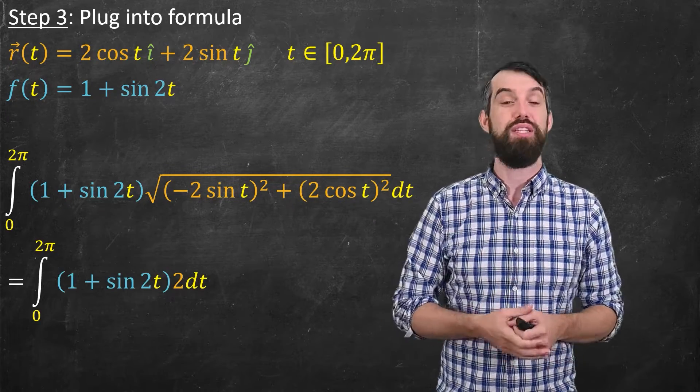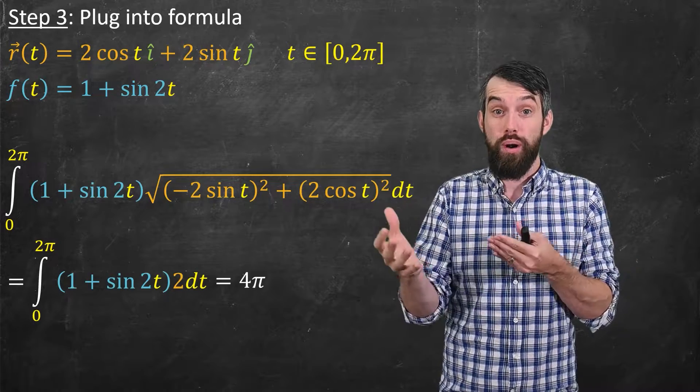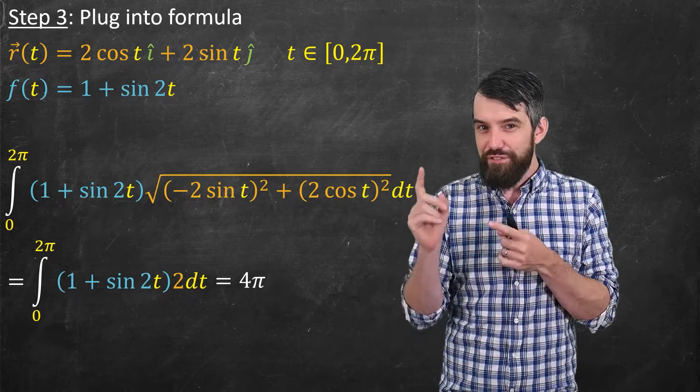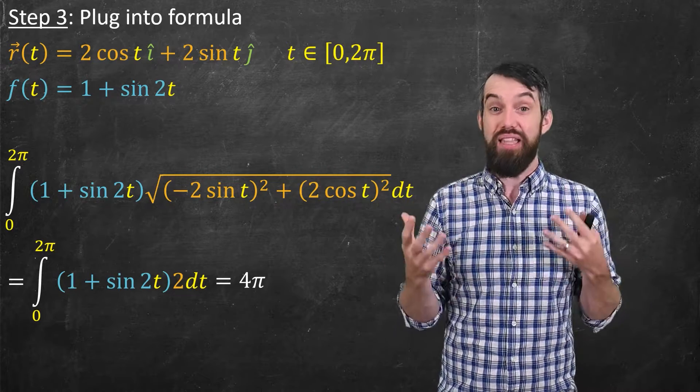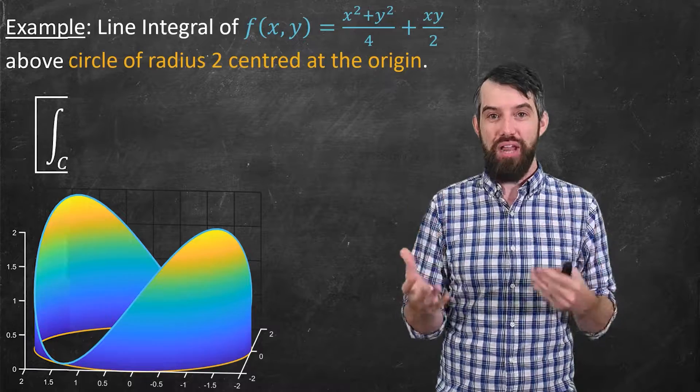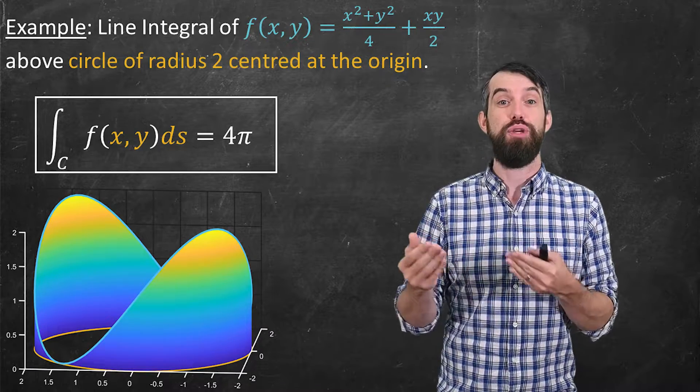And then, this is an easy enough integral, if you want to, you can test it out. It is equal to 4π. And so, my final answer then, if I return back to the original problem, so having this particular line integral, my final answer is that the line integral of this function is just equal to 4π.